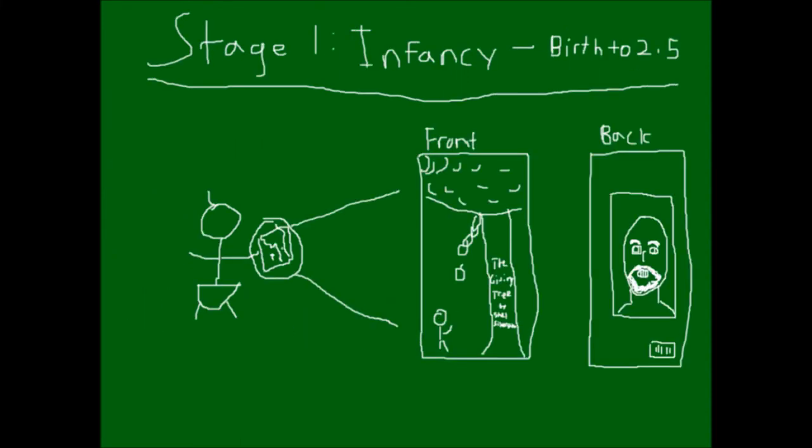The infant stage begins at birth and lasts until about age 2.5. The infant stage is pretty much as to be expected, roaming around making incomprehensible noises and screaming bloody murder at every instance possible. The only difference from the expected is that upon birth, the newborn comes out holding a copy of Shel Silverstein's The Giving Tree.